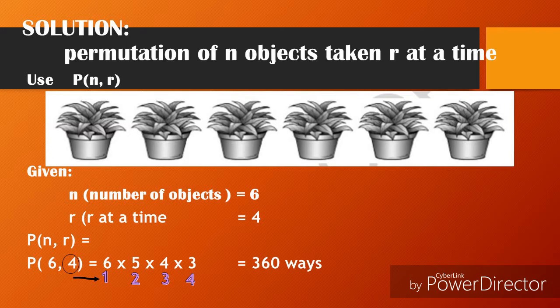Solution: For the permutation of n objects taken r at a time, we use P(n, r). The given values are n = 6 (number of objects) and r = 4 (taken r at a time). Substituting, P(6, 4) = 6 × 5 × 4 × 3, which equals 360 ways.